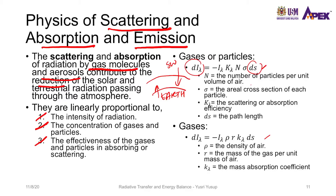ds is just the length that the radiation has to pass through. For gases, the equation is similar but the parameters used are slightly different: instead of n, it is rho, and instead of sigma, it is r. Rho is the density of air and r is the mass of the gas per unit mass of air.